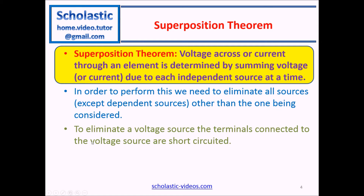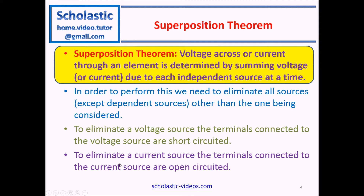To eliminate a voltage source, the terminals connected to the voltage source are short-circuited. And to eliminate a current source, the terminals connected to the current source are open-circuited. There are two types of sources: voltage source and current source.